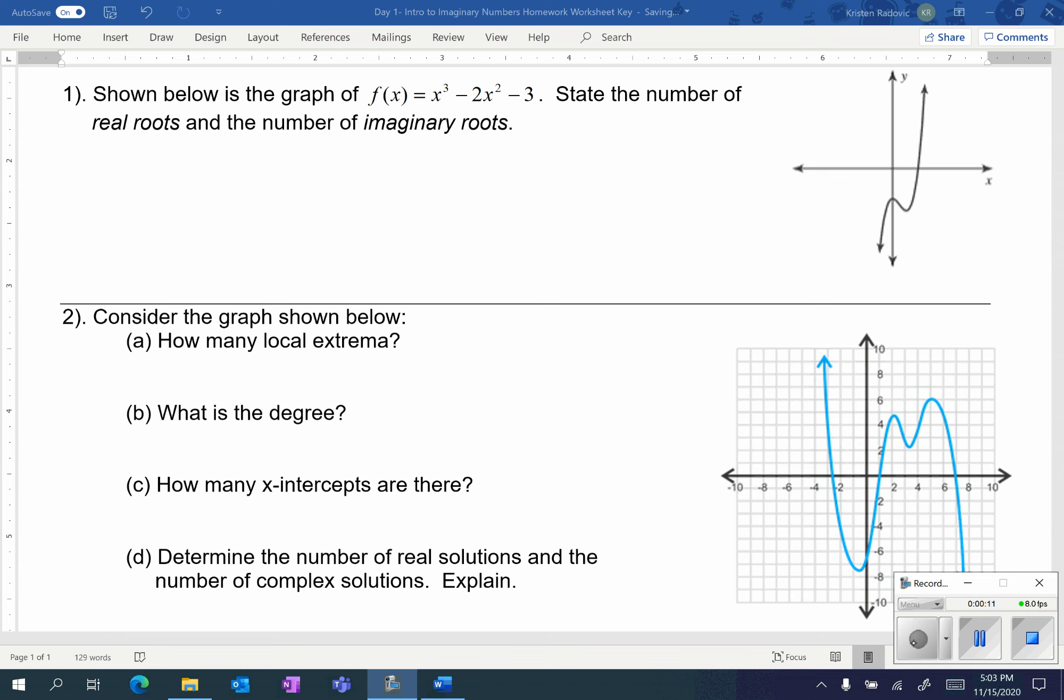For the first one, it says shown below is the graph of f(x) equals x cubed minus 2x squared minus 3. State the number of real roots and the number of imaginary roots.